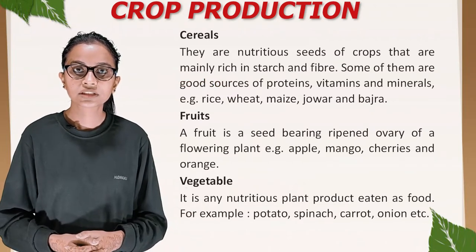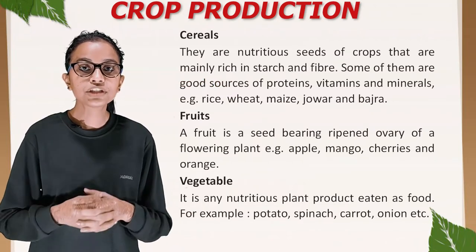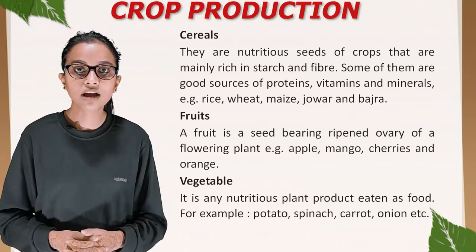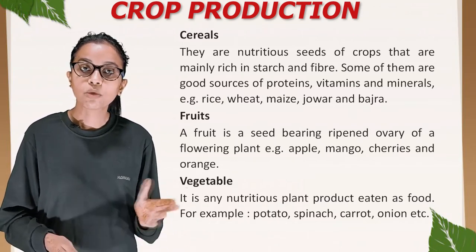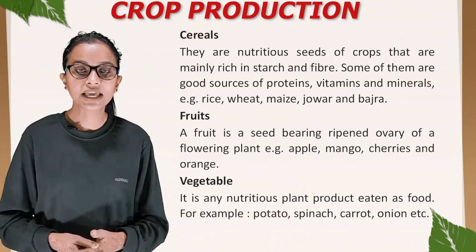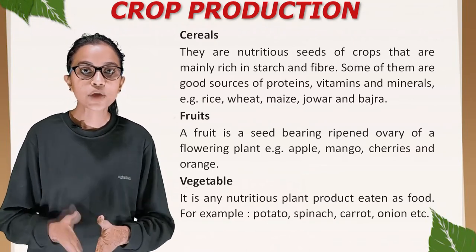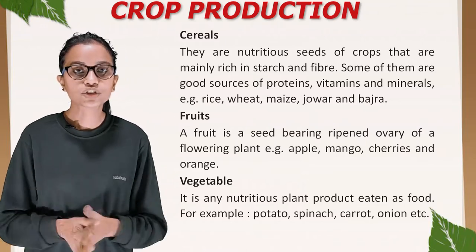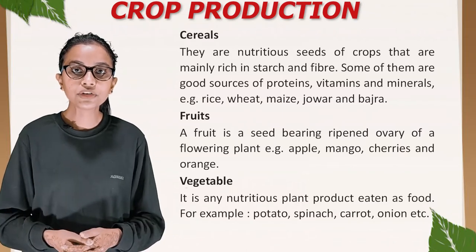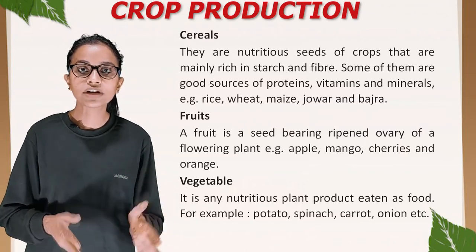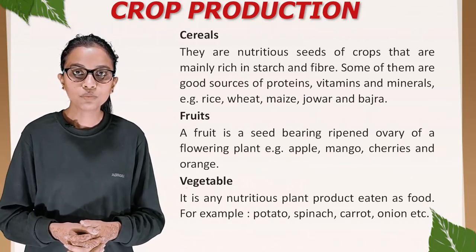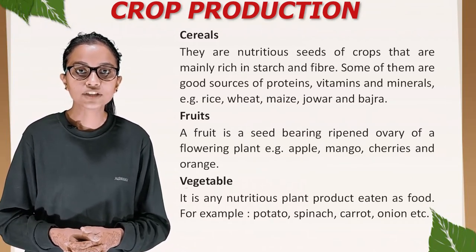Cereals have nutritious seeds that are mainly rich in starch and fiber. Some of them are also good sources of proteins, vitamins, and minerals. Examples include rice, wheat, maize, jowar, and bajra. A fruit is a seed-bearing ripened ovary of a flowering plant — for example, apple, mango, cherries, and orange.